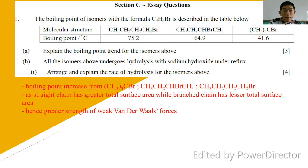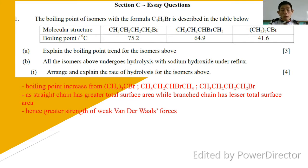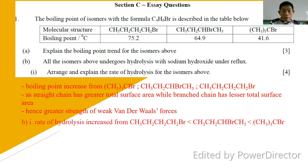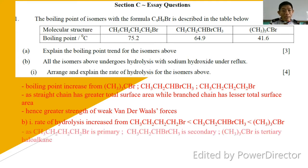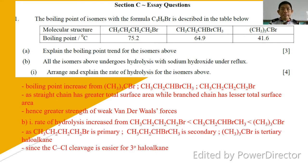Continuing with question 1b: all isomers above undergo hydrolysis with sodium hydroxide under reflux. Part 1 asks you to arrange and explain the rate of hydrolysis. A tertiary haloalkane is the easiest to undergo hydrolysis, followed by secondary, followed by primary. In other words, the tertiary haloalkane will have the highest rate of reaction. This is because C-C bond cleavage is easier for tertiary haloalkanes since they have a greater steric effect.